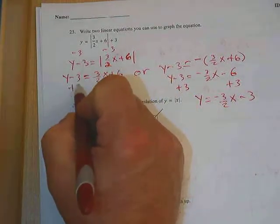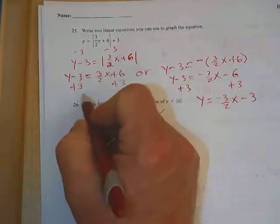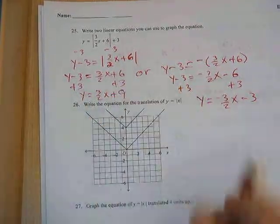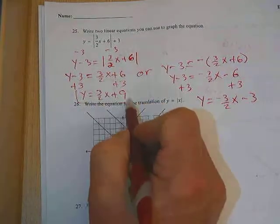Over here, what do I need to do to get this in slope intercept form? Add 3 to both sides, and y equals 3 halves x plus 9.